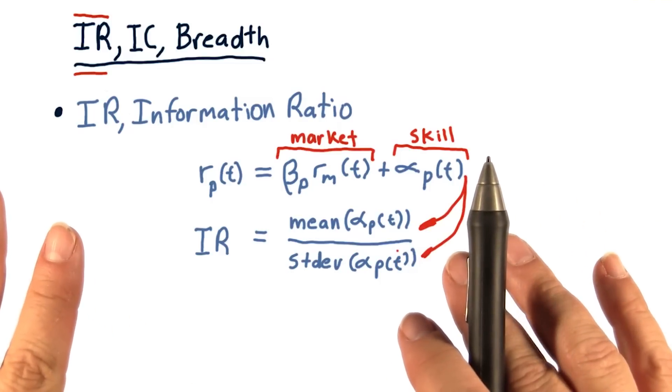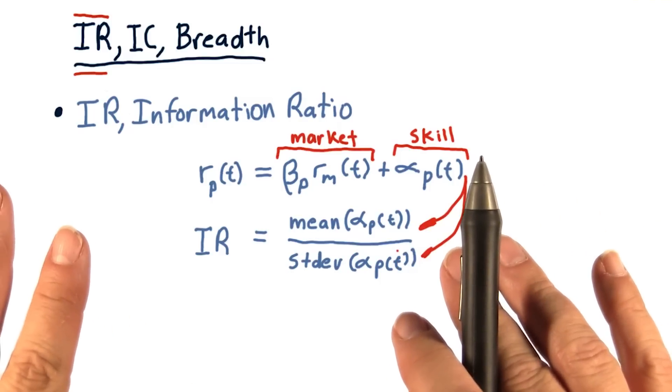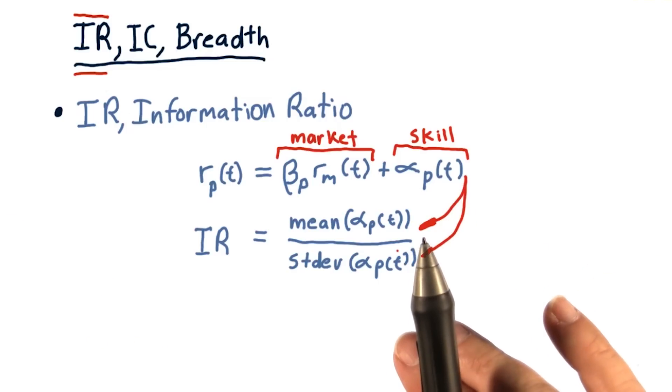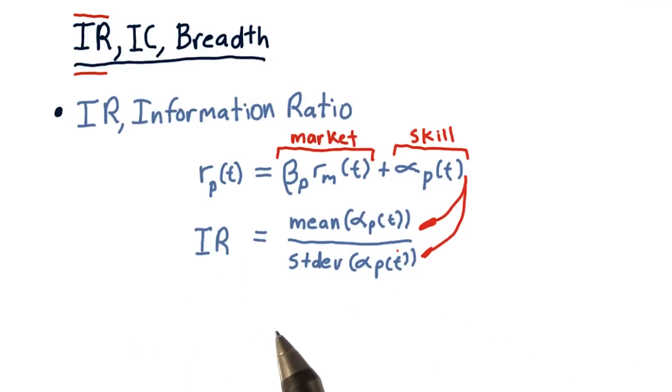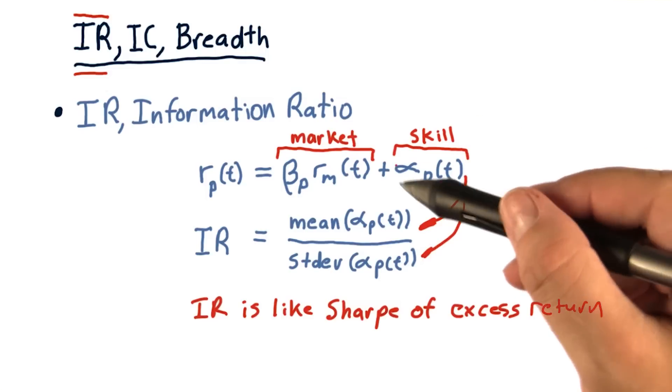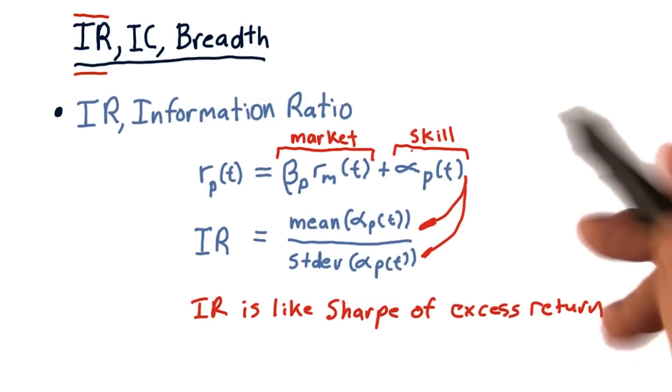Now, by the way, this information ratio applies in many different cases, not just in this fundamental law case. People use information ratio as a measure of manager performance all the time. It's fair to say that information ratio is essentially a Sharpe ratio of excess return, this part that's due to skill.